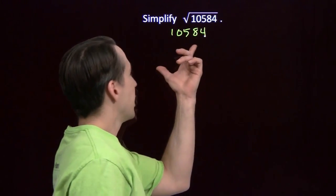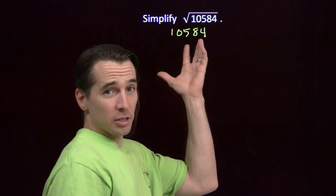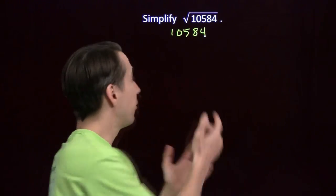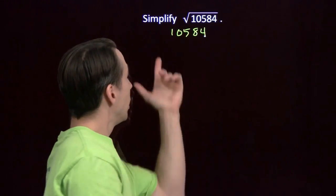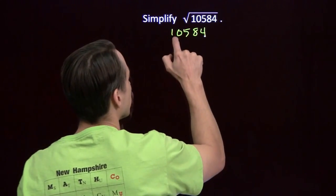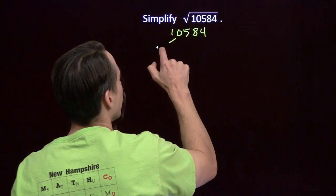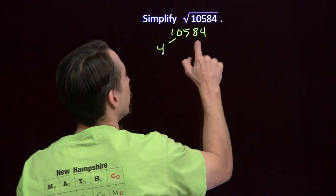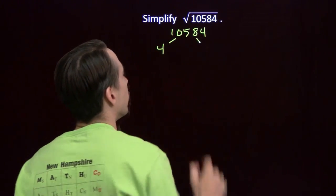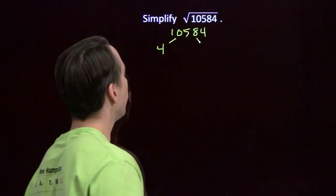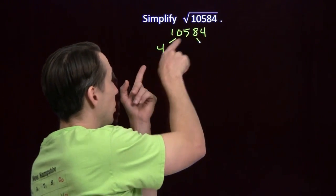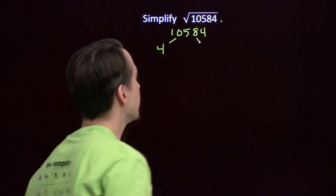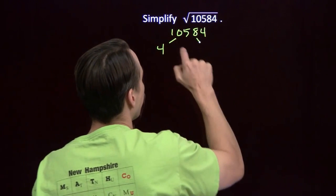The last two digits of this are 84. That's divisible by 4, so we know that 10,584 is divisible by 4. That's our nice little divisibility rule for 4. So now we divide 4 into this to see what's left.